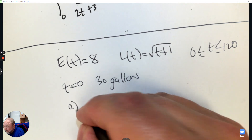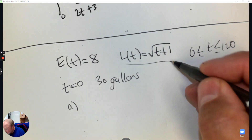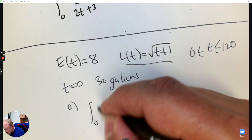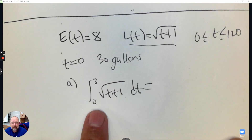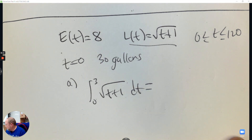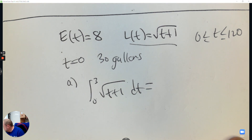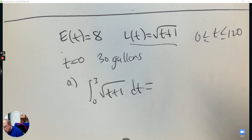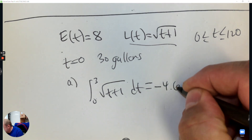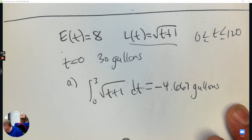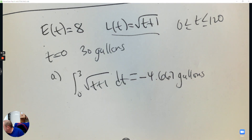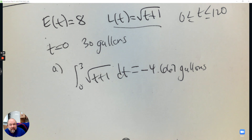Part A: how many gallons of water leak out? Leak out from zero to three — that is an integration question. So from zero to three, type that in your calculator, and you get negative 4.667 gallons. The reason it's negative is because that's the water that's being lost.